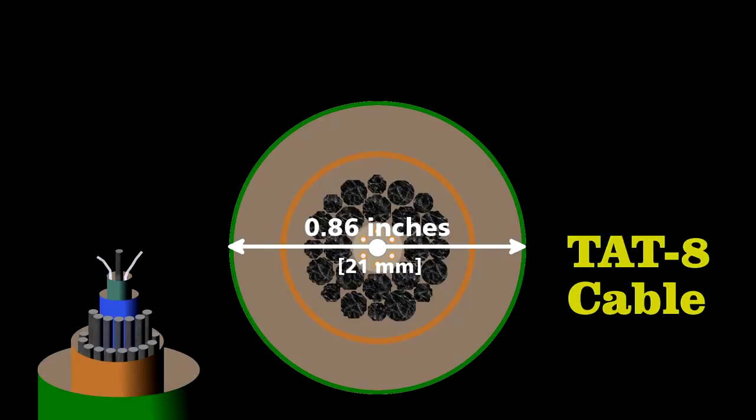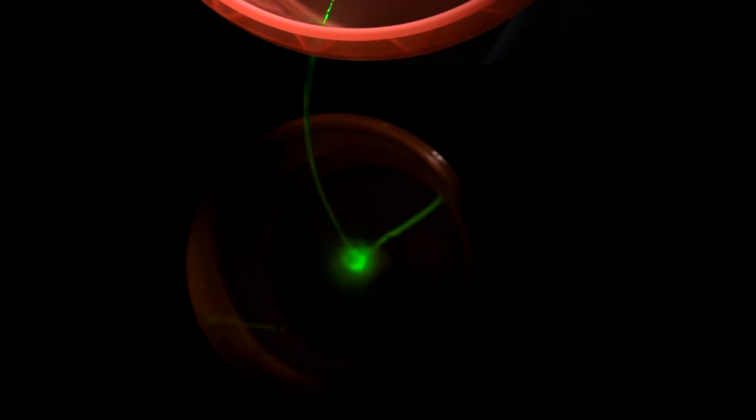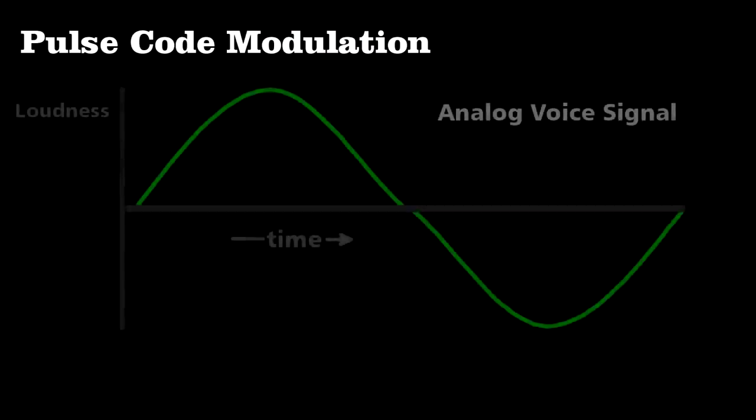The essence of how they send information through a fiber-optic cable is very simple. I could have a prearranged signal with someone at the other end. Perhaps we'll use Morse code, and I just block the laser so that the person at that end sees flashes that communicate a message. To transmit an analog signal, like voice from a phone call along the cable, engineers use pulse code modulation.